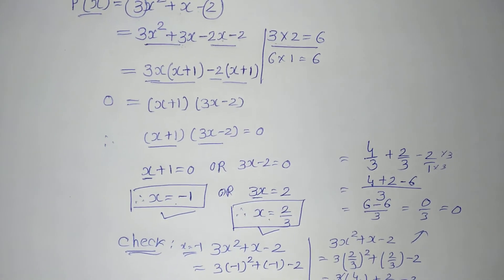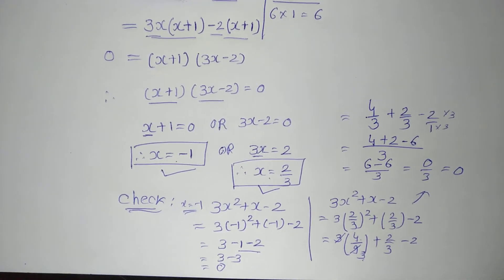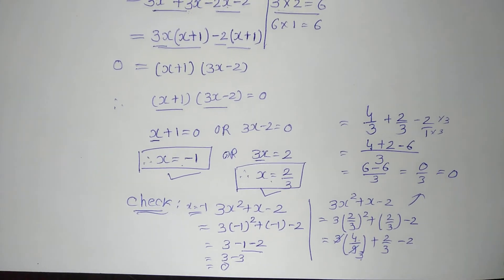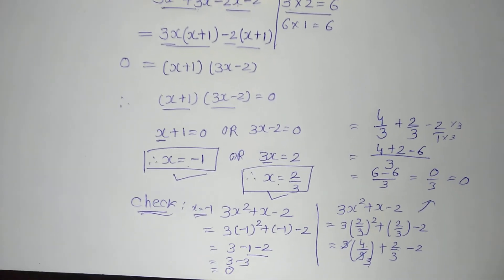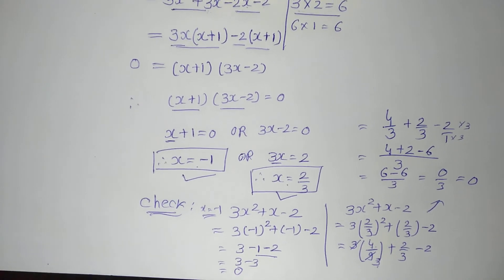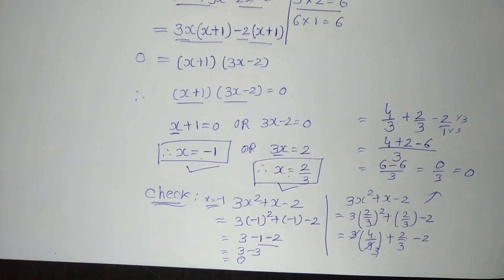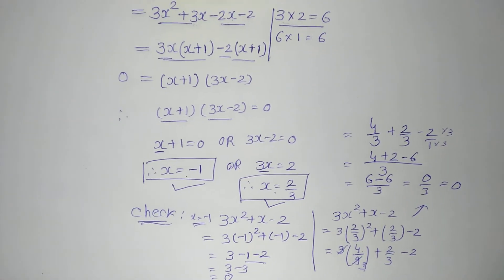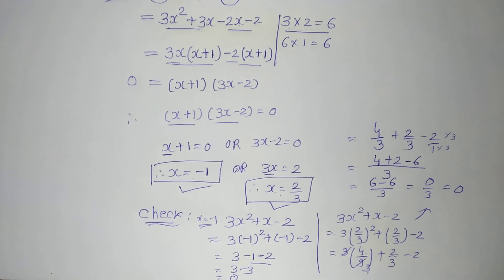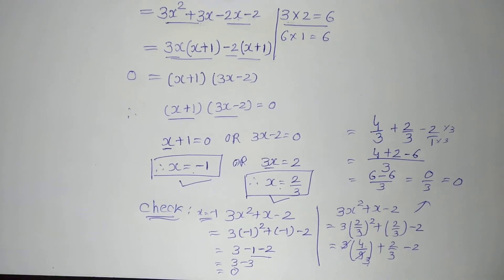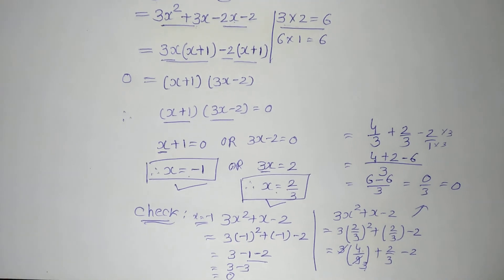So we can say that the zeros of the polynomial 3x² + x − 2 are: the first zero is −1 and the second zero is 2/3. I hope you understand how to find out the zeros of a polynomial and how we verified both values. If you like this video, please share it with your friends and ask them to subscribe to my channel. Thank you so much.